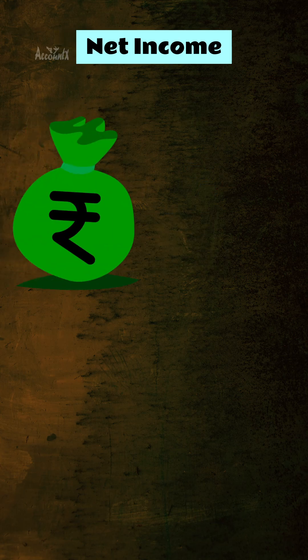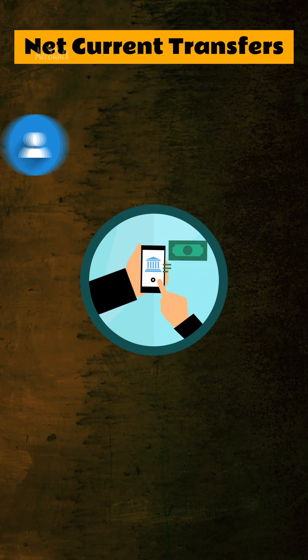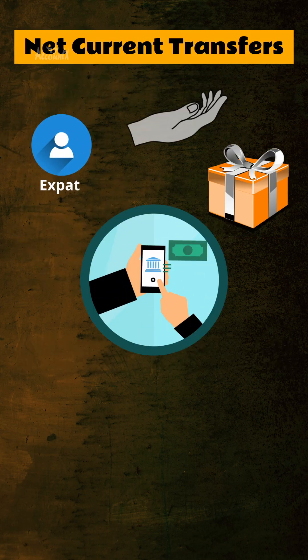Net income includes income like dividends, interest, etc. Net current transfers include remittances from overseas employees, gifts, foreign aid, etc.